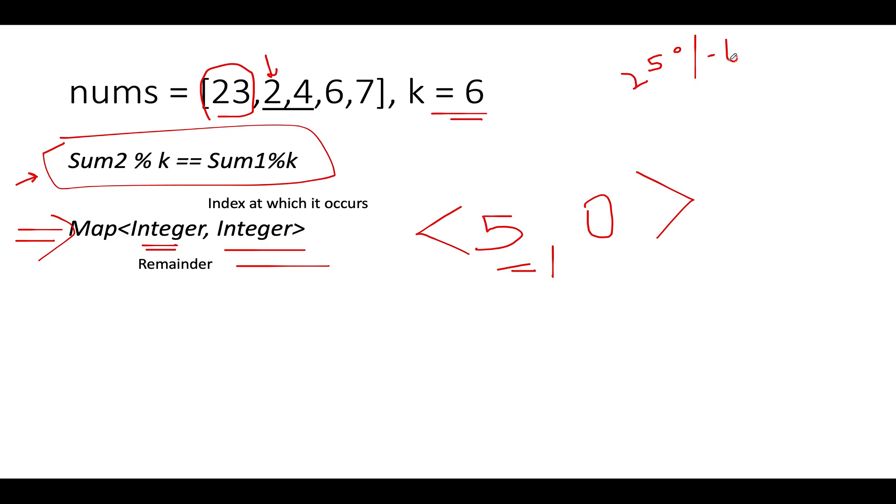You get 1. So is 1 part of the map? 1 is not part of the map. So what we are going to do? We will make an addition into the map saying that 1 remainder occurs at 1 index.